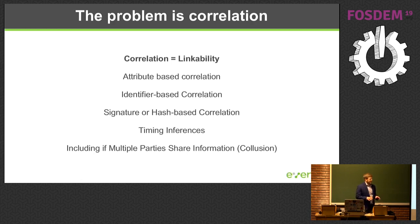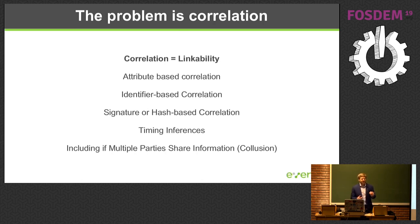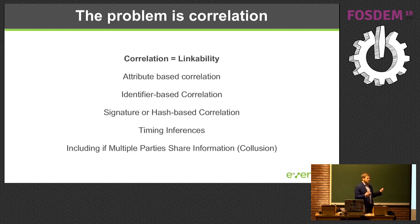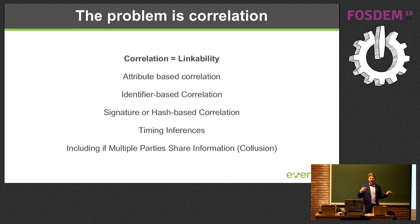The main design goal of Indy is to avoid correlation. Linkability is what creates the ad-model use cases that a lot of bad actors in the ecosystem have built their businesses around. The most obvious is identifier-based correlation — my name, my IP address, my phone number — that can be used to track me through an ecosystem. Similarly, just attributes about me — knowing I'm a white male from the western United States who works in software — means you can probably figure out and track me through the internet, even without knowing my name. Taking a signature or hash of this information can also be tracked because it's a one-way function and you end up with the same signature each time, so we need to be careful that hashes aren't trackable.